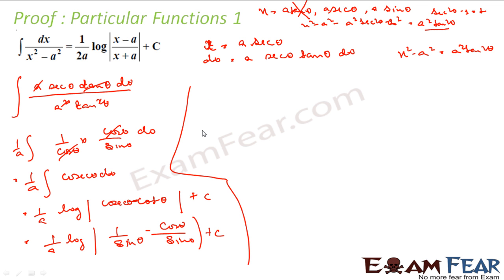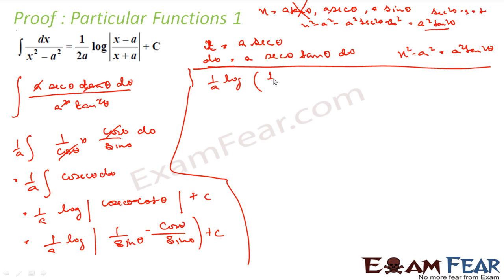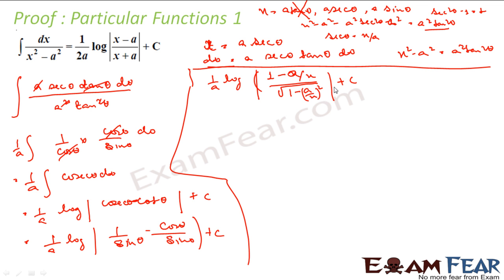Now I need to back-substitute. Since x = a·sec θ, we have sec θ = x/a, so cos θ = a/x. And sin θ = √(1 - cos²θ) = √(1 - a²/x²). So I can now write the result in terms of x.